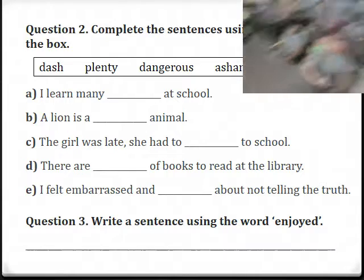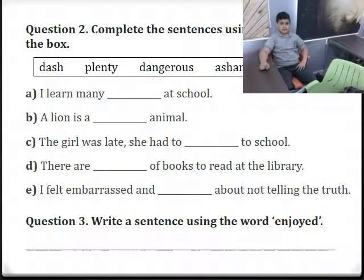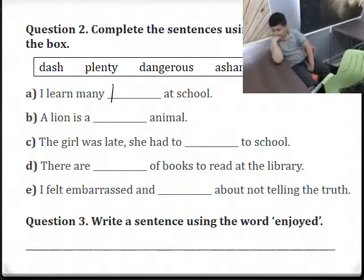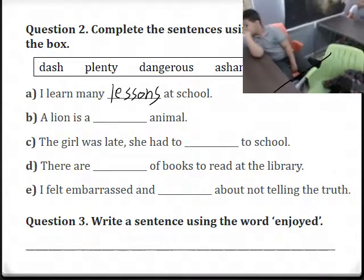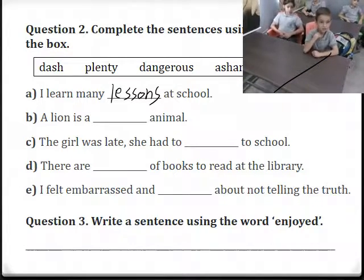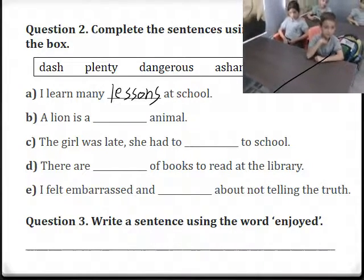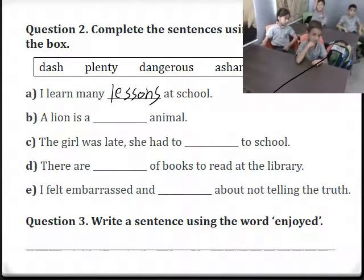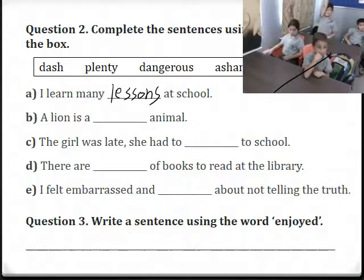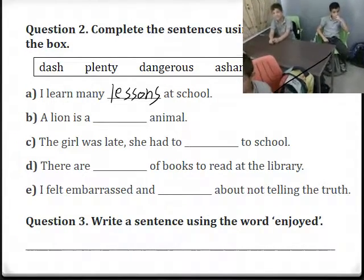The first sentence: 'I learned many lessons at school.' Which word? Lessons. Very good — I learned many lessons at school. Next: 'A lion is a dangerous animal.' Is a lion shy or embarrassed? No — dangerous. A lion is a dangerous animal.